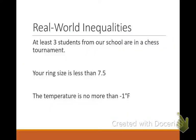When writing my own inequality, I always want to start with a variable — the variable means all of the acceptable solutions that would make the inequality true. It says at least three students from our school are in a chess tournament. Are y'all okay if I use S for students? So if it's at least three students, that means the acceptable number of students is greater than or equal to three. It could be three, four, or five.